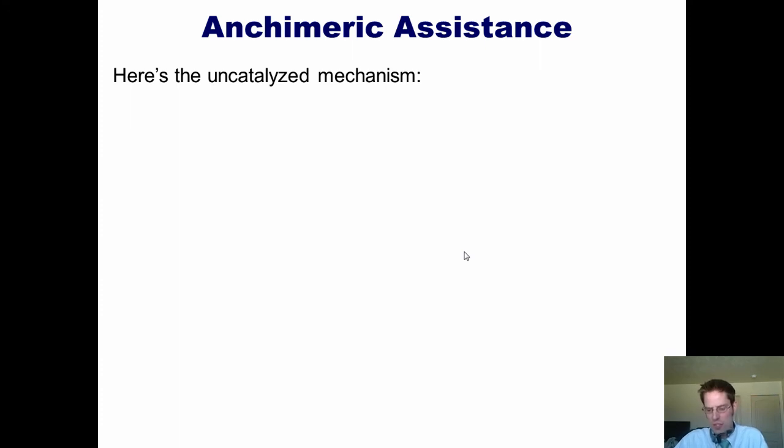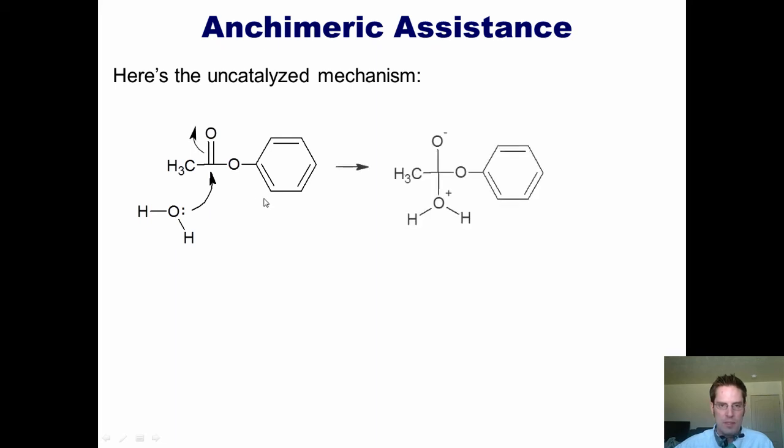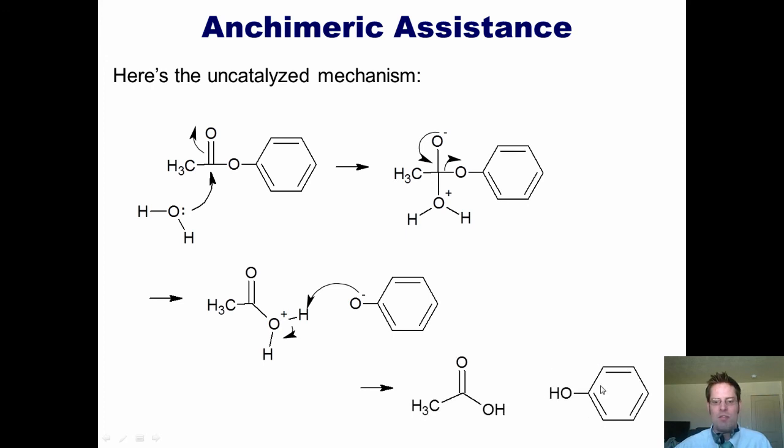Well, to answer that question, we have to first look at the mechanism of the uncatalyzed reaction. So here's that mechanism. I have my starting material. Water comes in. Lone pairs on the oxygen go into the carbonyl carbon. Electrons go up. Gives me this tetrahedral intermediate. Electrons go down and displace this phenoxy group. The phenoxy group then deprotonates the positively charged oxygen species to give me the final product, phenol and acetic acid. So this is the overall reaction mechanism.